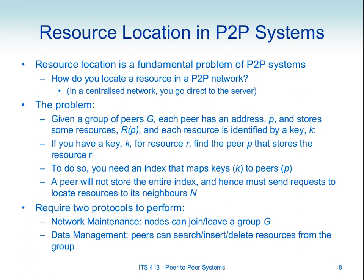Think of these four computers as four random computers in the internet — not in the same LAN. For you to join this peer-to-peer network you need to know some of those existing peers in the network, so there needs to be some way to join a group. Once you join, you need a way to search — given a key, find a resource or find the peer storing that resource — and also to insert new resources and delete old resources. For example, if resource R3 is no longer available at P2, we need to delete that resource from the network and update the index accordingly.